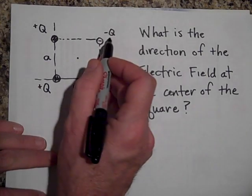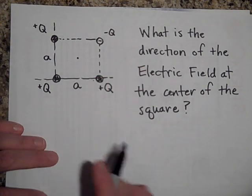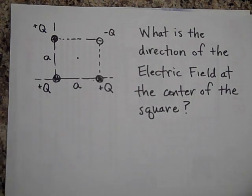This is positive Q, negative Q, positive Q and positive Q. This is a square. All these Q's have the same magnitude. This one is negative. Go ahead and see if you can figure it out.